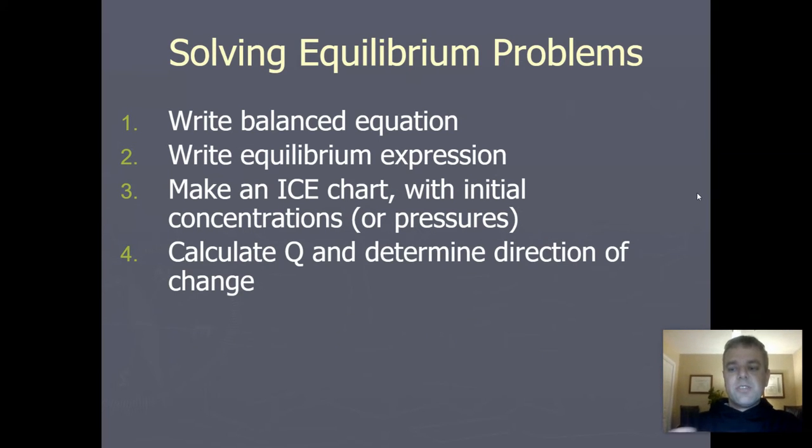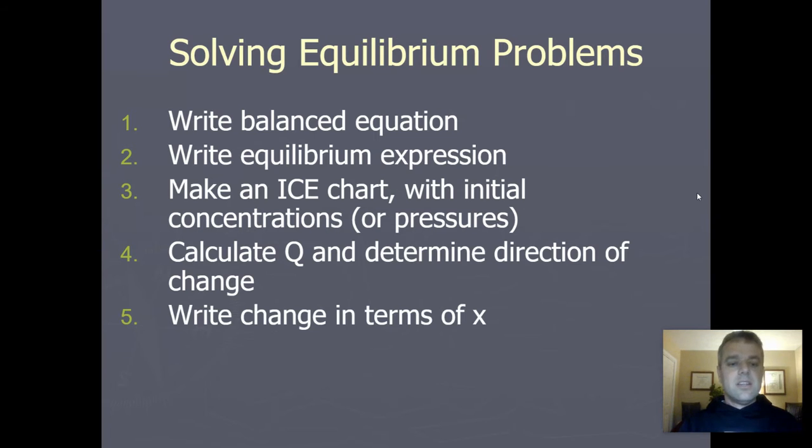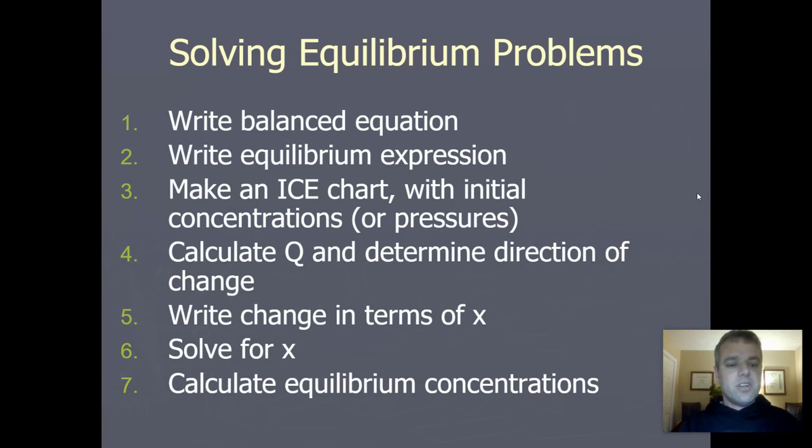Then if you're not sure which way equilibrium would shift, you then need to calculate Q to figure out which direction everything's going to go. That way you can figure out, are we shifting towards the reactants side or are we shifting towards the product side? You write the change in terms of X, you solve for X, and you calculate the equilibrium concentrations.